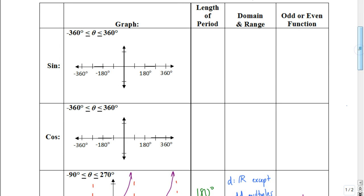Now I want you to do the same thing with the sine and cosine. Take a minute, pause this video, and try to remember what the sine and cosine functions look like when graphed. Use what we just talked about to review the length of the period, the domain and range, and whether each would be odd or even. Go ahead and take a minute to complete this table, then hit play when you're ready to check your work.